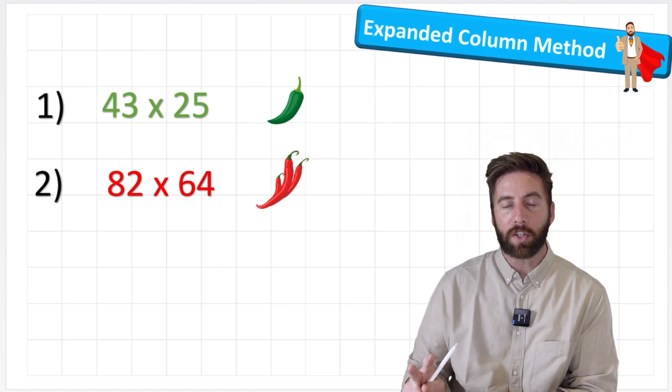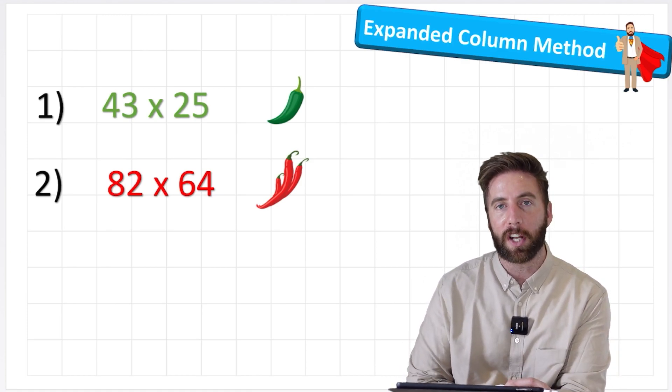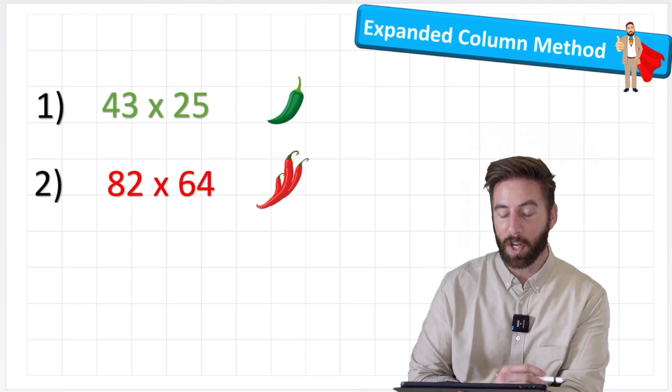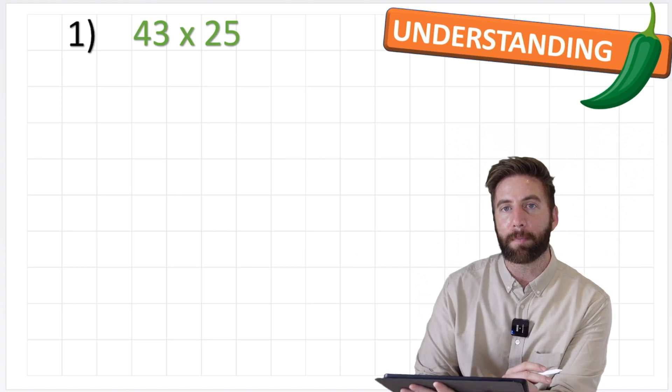So today we're going to look at these two questions. We've got a green chili challenge of 43 times 25 and we've got a red chili, a harder challenge, 82 times 64. So let's begin with our green chili challenge 43 by 25.